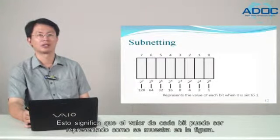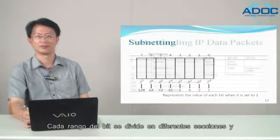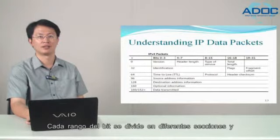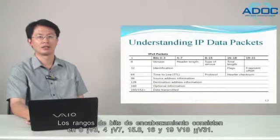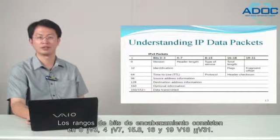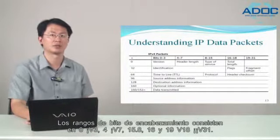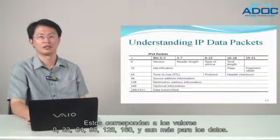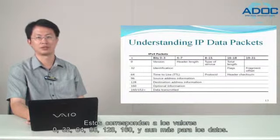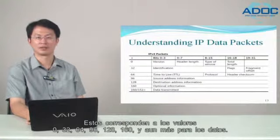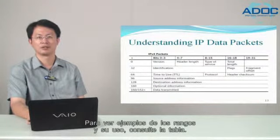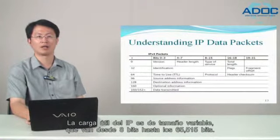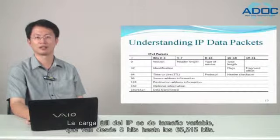The value of each bit can be represented as shown in the figures. Each bit's range is broken into different sections, and each section corresponds to the range of numbers in a related field in a packet. Header-based ranges consist of 0 to 3, 4 to 7, 8 to 15, 16 to 18, and 19 to 31, corresponding to values 0, 32, 64, 96, 128, 160, and more for data. The IP payload is of variable size, ranging from 8 bytes to 65,515 bytes.